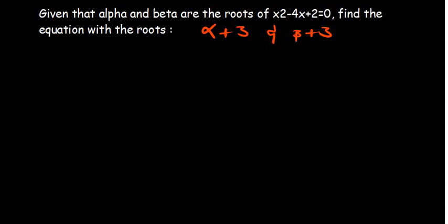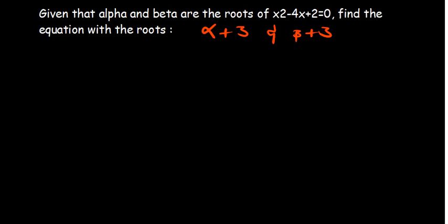In this video, we want to talk about the alpha and beta roots and understand how we find the new equation when given the roots of the new equation. In this problem, we are told that alpha and beta are the roots of the equation x squared minus 4x plus 2 equals 0.